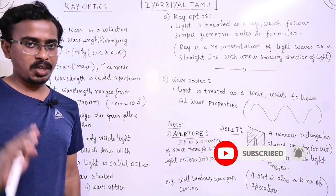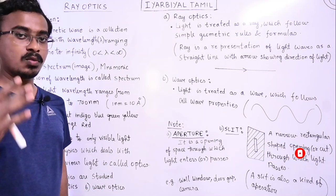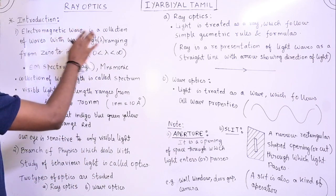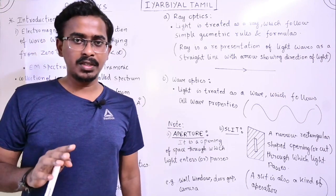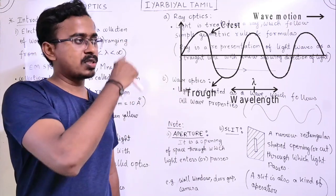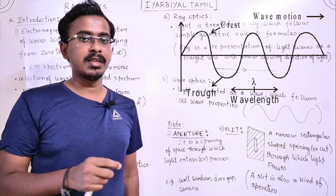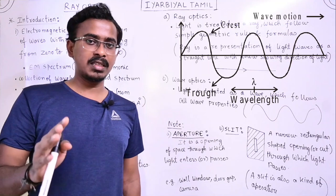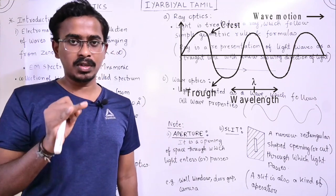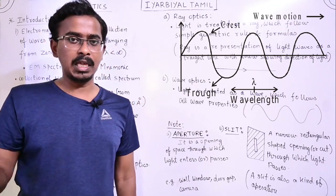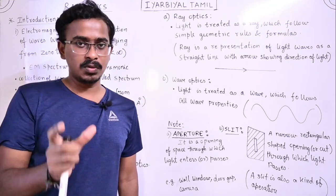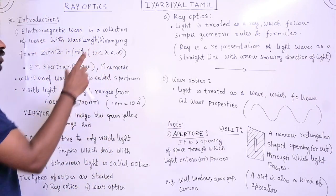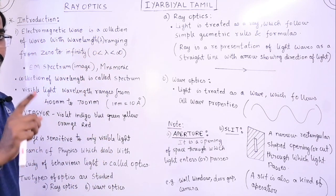Now, what do we know about Ray Optics? First, what is an Electromagnetic Wave? An Electromagnetic Wave is a collection of waves with wavelength ranging from 0 to infinity. We know what a wave is — a sinusoidal or cosine curve. The wavelength ranges from 0 to infinity, and we call all of these waves together the Electromagnetic Wave.